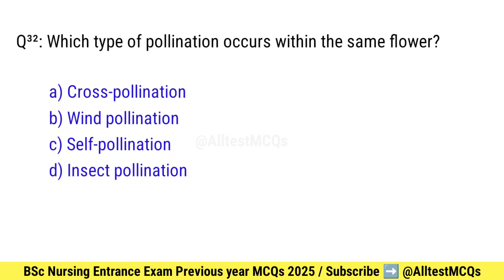Question number 32. Which type of pollination occurs within the same flower? Right option is C: Self-pollination.